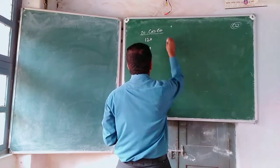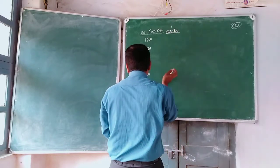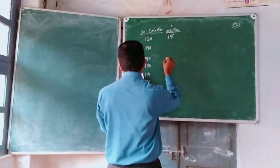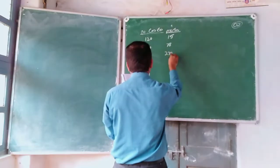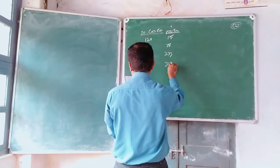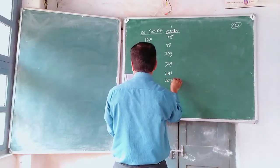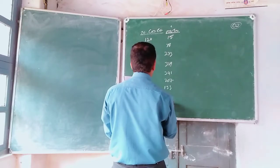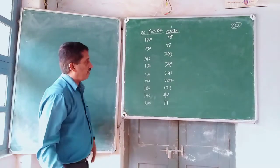Now, the second column is number of trees. Number of trees is given, with values listed for each coconut count category.